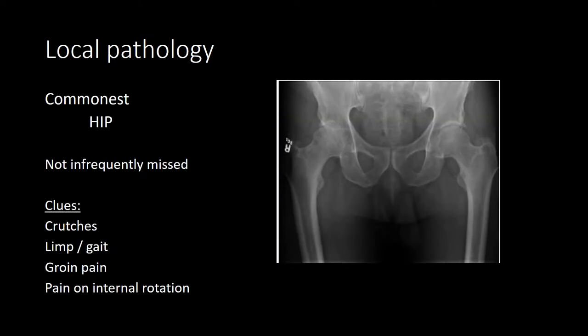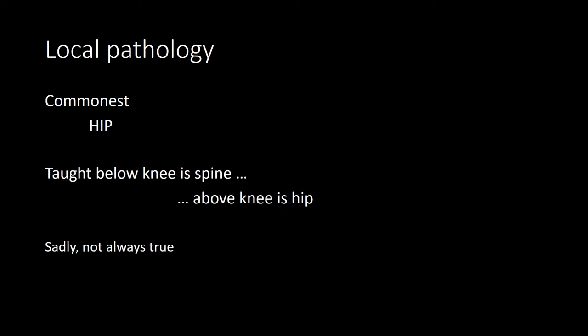In terms of local pathology, the most common cause of pain would be that of the hip — sadly this is not infrequently missed. Clues to hip pathology include patients presenting on crutches; it is very seldom that a spine patient requires crutches. The patient with hip pathology generally has antalgic gait or limp, groin pain, and pain in the groin with provocative internal rotation. We are taught that pain radiating beyond the knee is due to a spinal cause, and pain stopping above the knee is from the hip. Sadly, this is not always true.